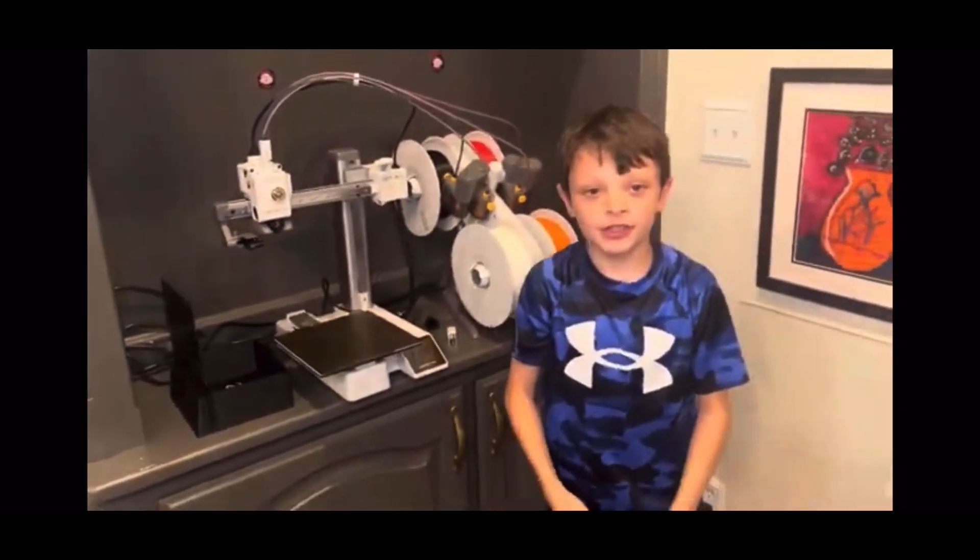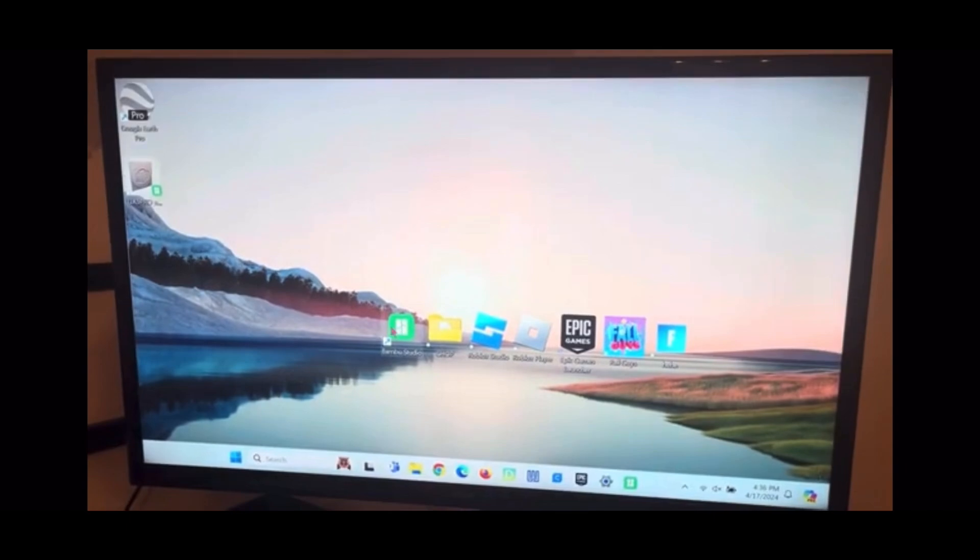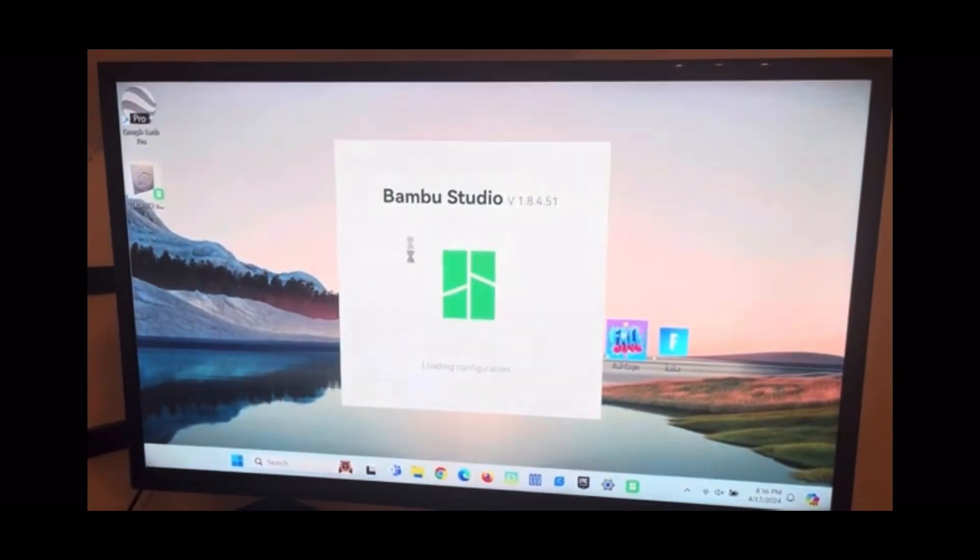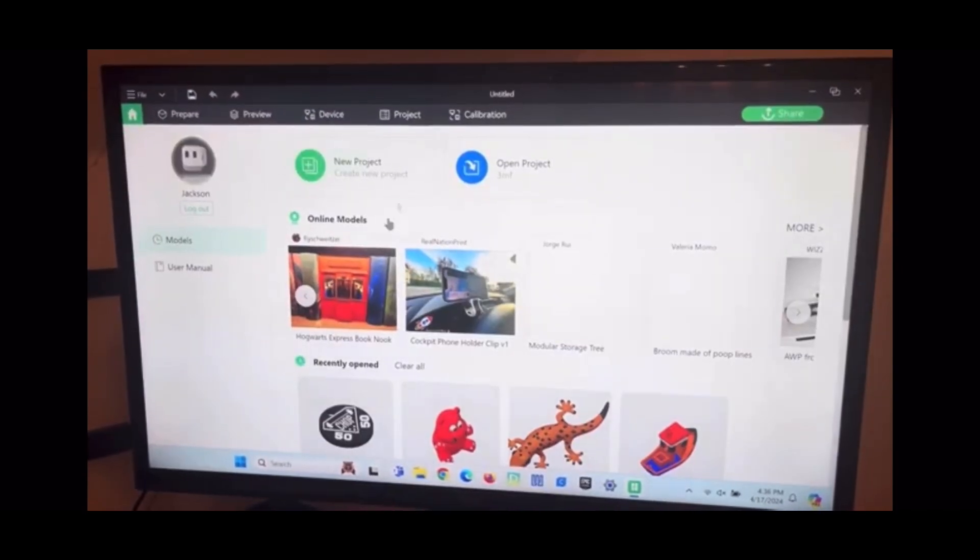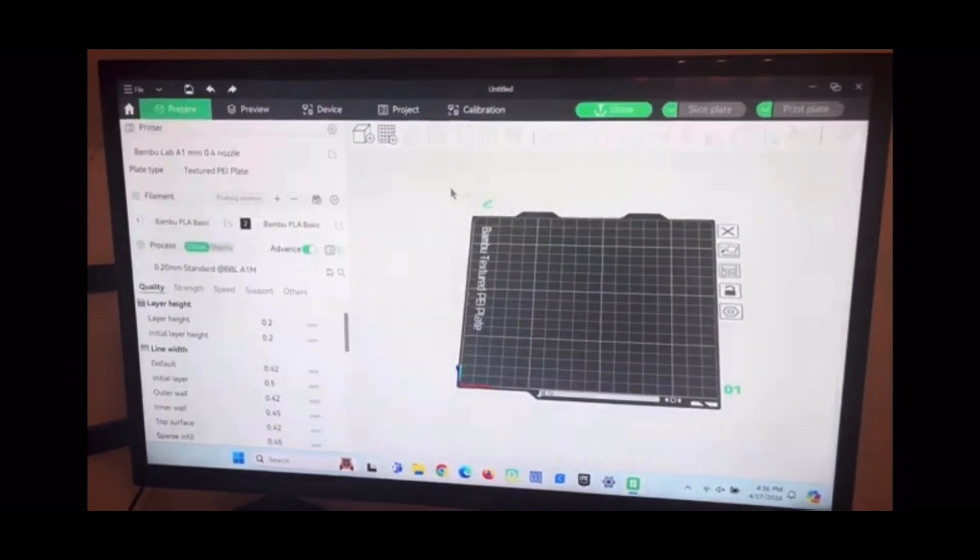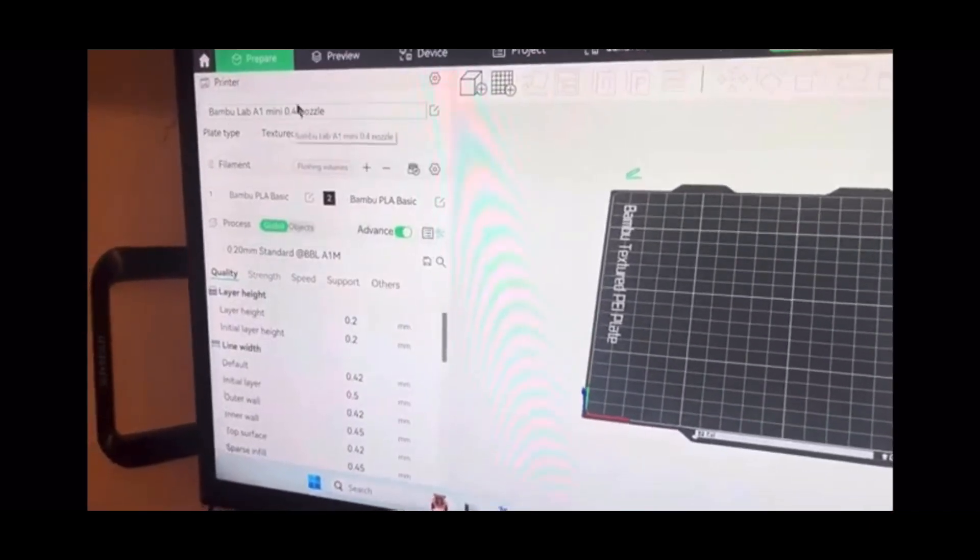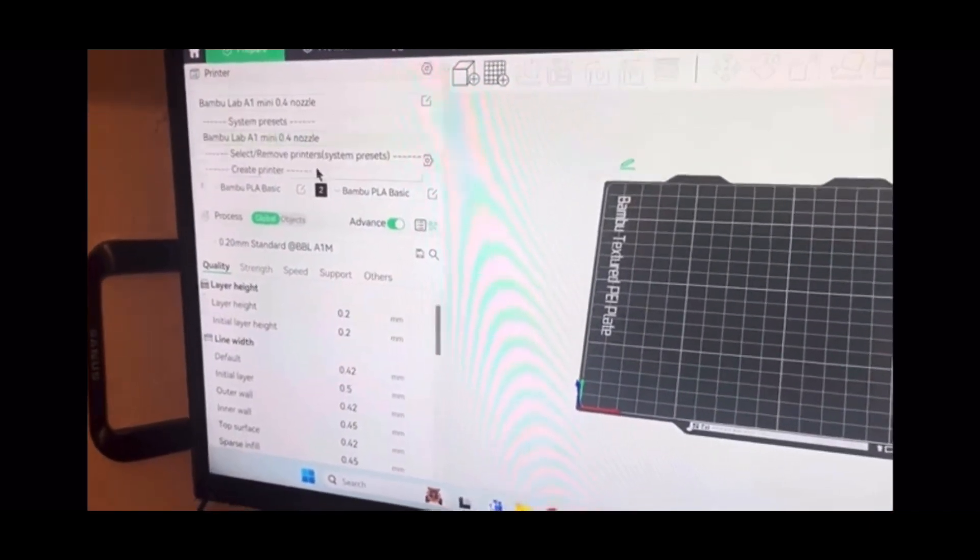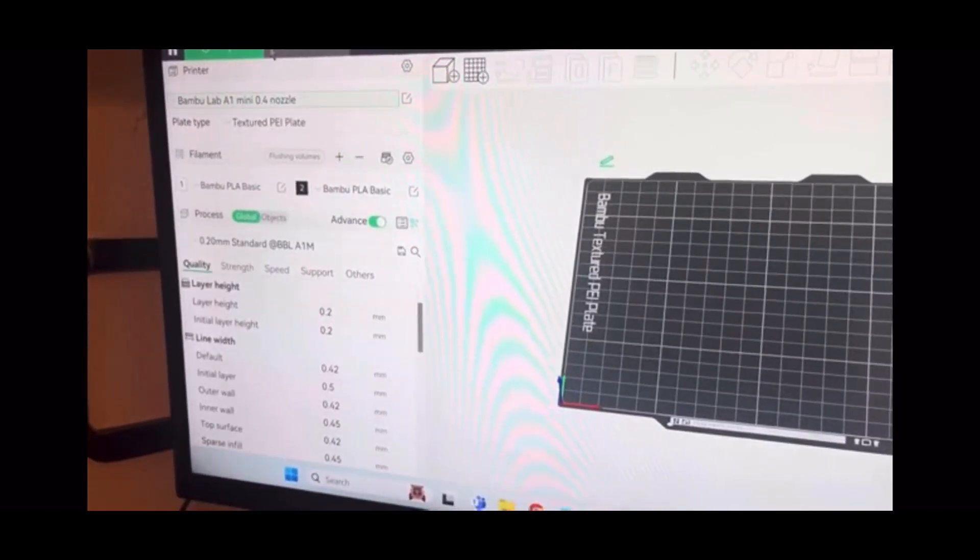Now we're going to set it up on my computer. First, we're going to open up Bambu Studio. Once it opens, you're going to click create project. Then you click this printer, click the drop down menu. If it says we had the 0.4 but we have the 0.2, I'm going to go to the settings.